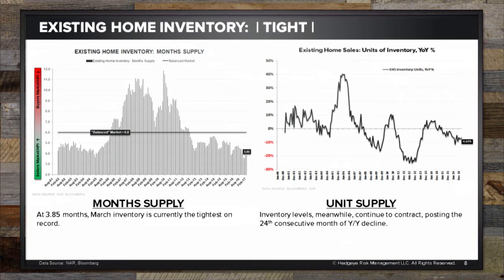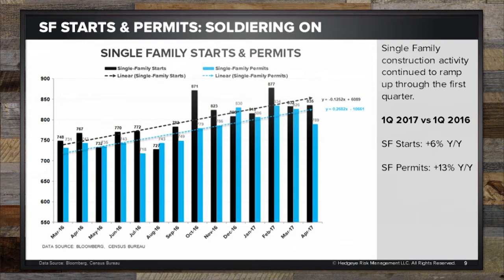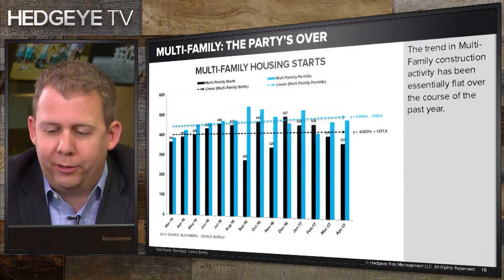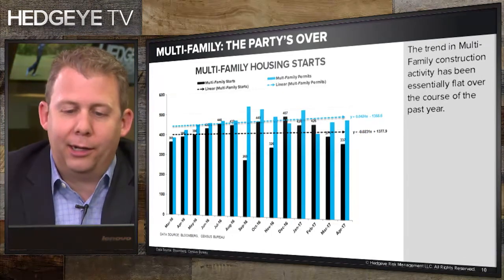On slide eight, the new home market: single-family housing starts and permits are climbing — starts up 6% year-over-year, permits up 13% year-over-year. Looking at the multifamily market on slide nine, it's a different story. Multifamily had been the driver of construction growth post-crisis up until about a year ago, and now for the past year multifamily has basically been sideways. So single-family is still growing; multifamily is pretty stagnant.